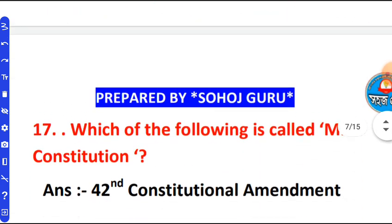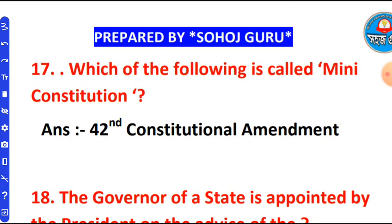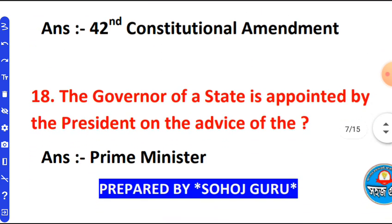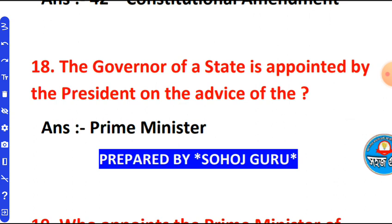The next question is: which of the following is known as the 'Mini-Constitution'? This refers to the 42nd Amendment Act. The governor of a state is appointed by the President on the advice of the government.